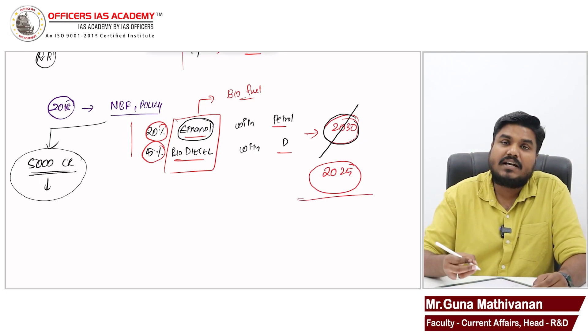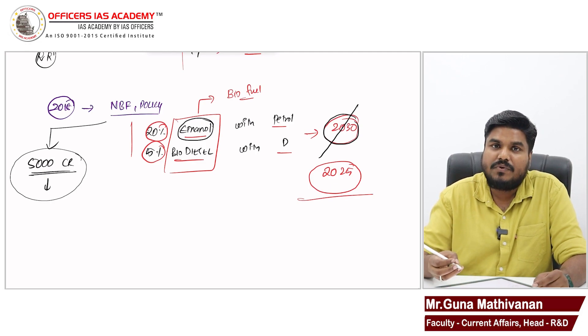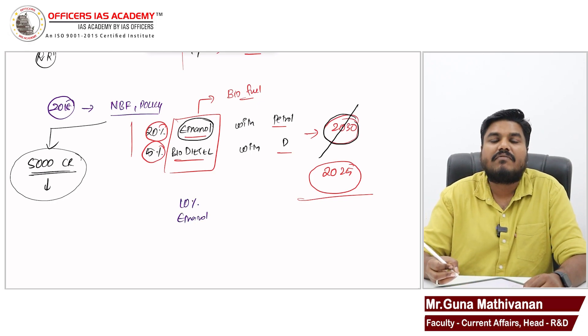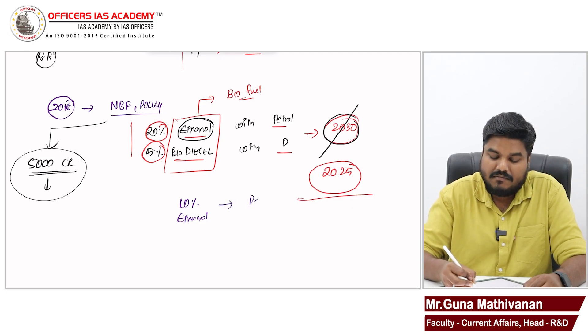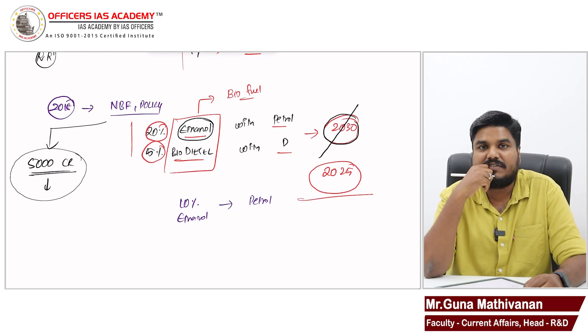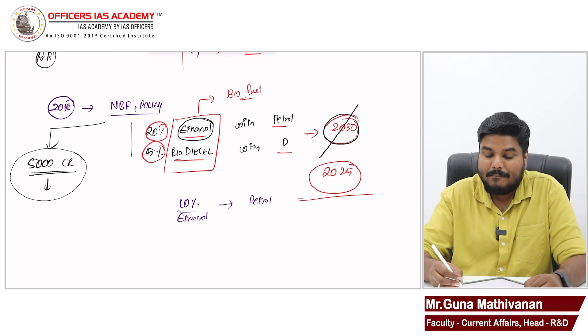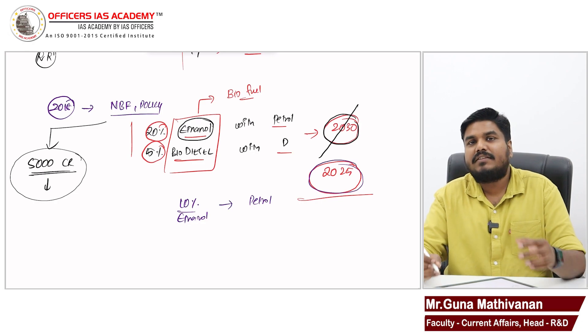What is the current status? How much we have blended? So, as of 2022, we have blended 10%. We have blended 10% of ethanol with petrol. We have to achieve blending of another 10% of ethanol with petrol by 2025. It is going to be really challenging.